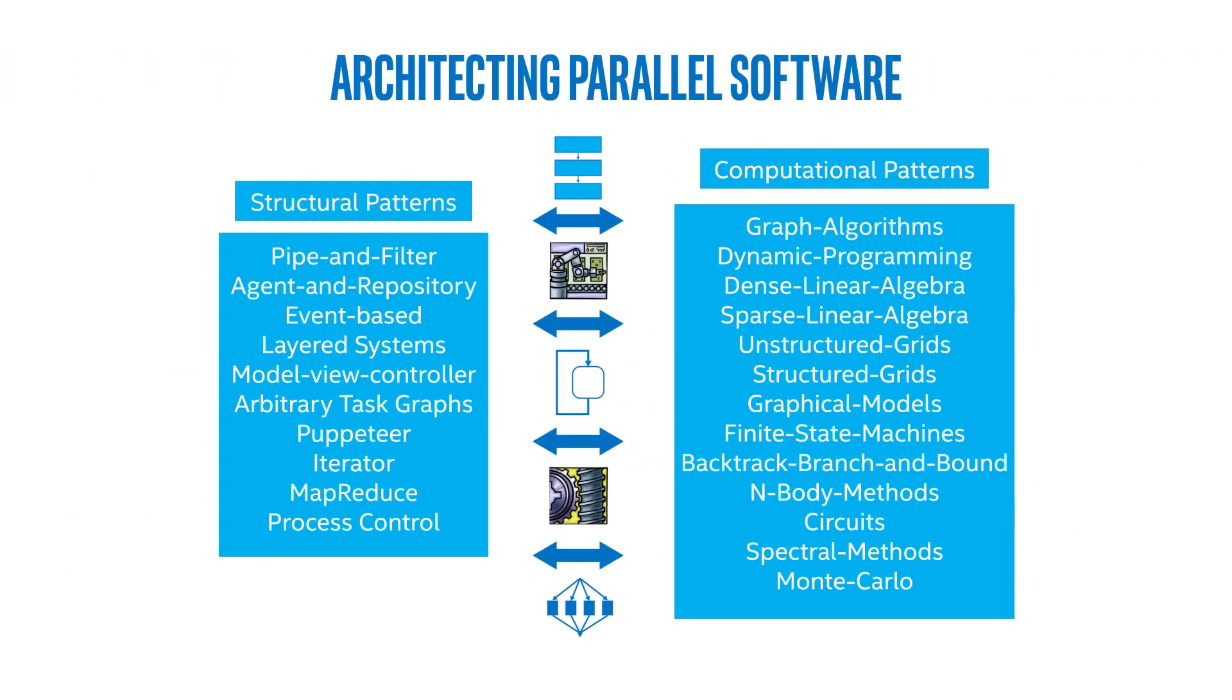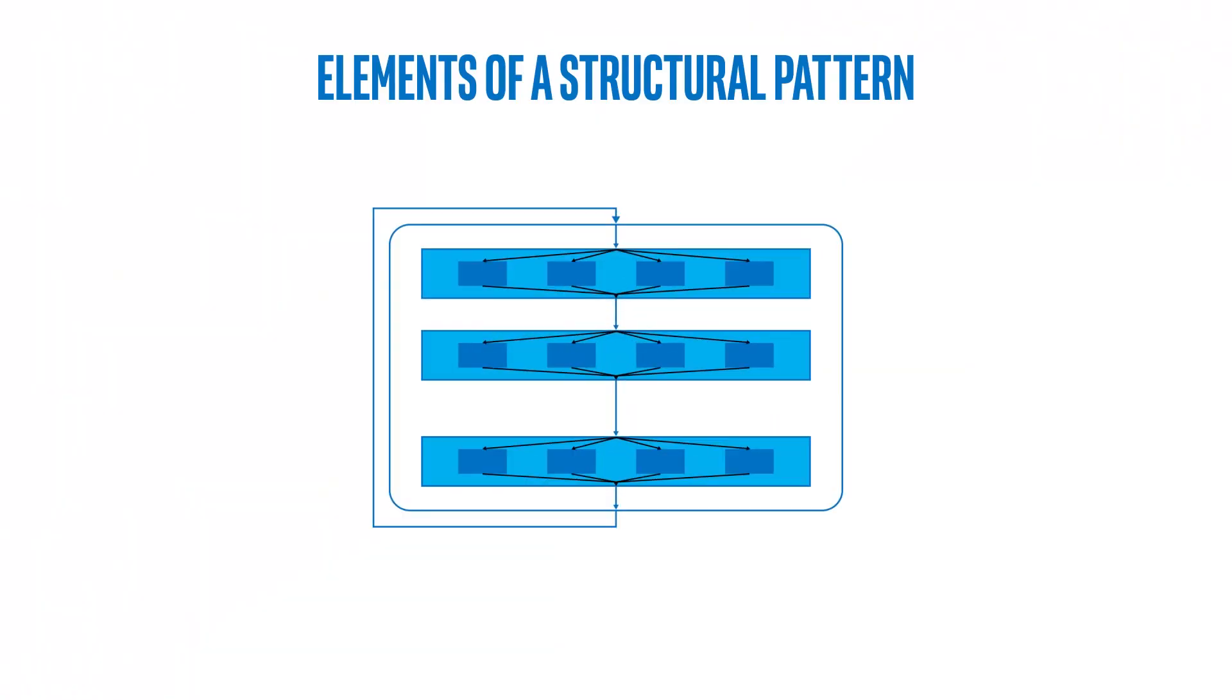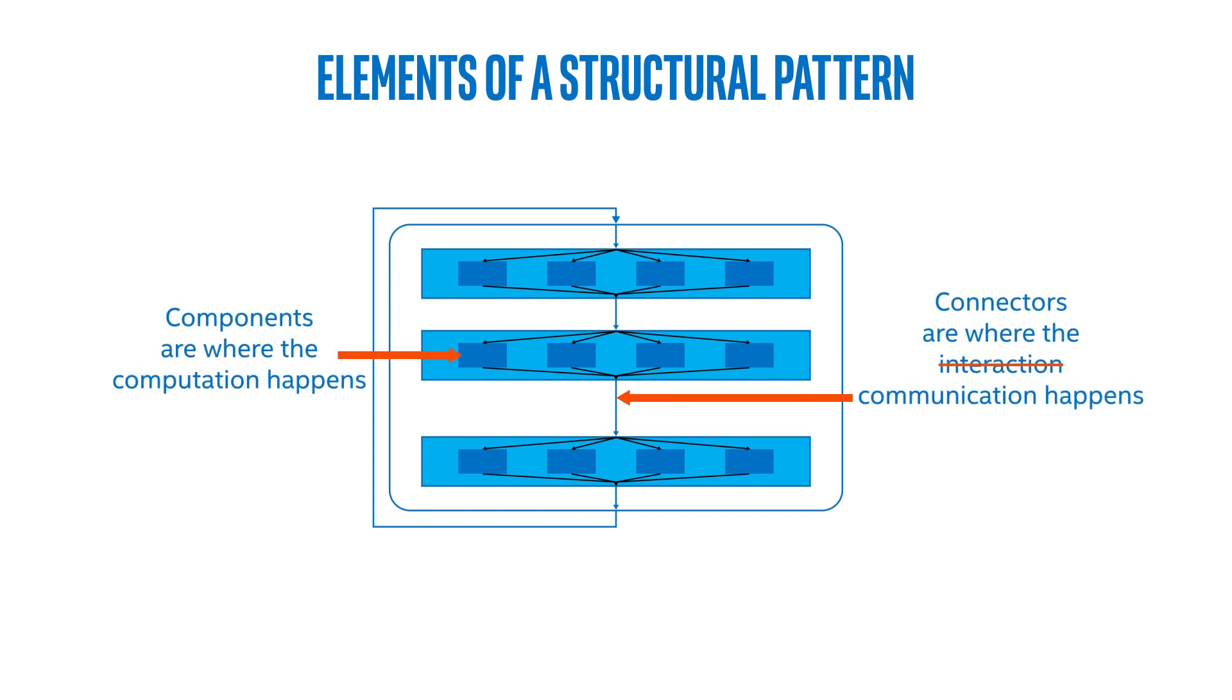When we architect parallel software, we look at 10 structural patterns and 13 computational patterns, and we hierarchically refine one in terms of the other. We're going to focus today on just three structural patterns, but first let's talk about what are the elements of structural patterns. So it's very simple: they're just components, which is where the computation happens, and connectors where the communication happens. Just a slight variation on Garland and Shaw—connectors are where the interaction happens. Here we see the interaction happening by way of explicit communication.